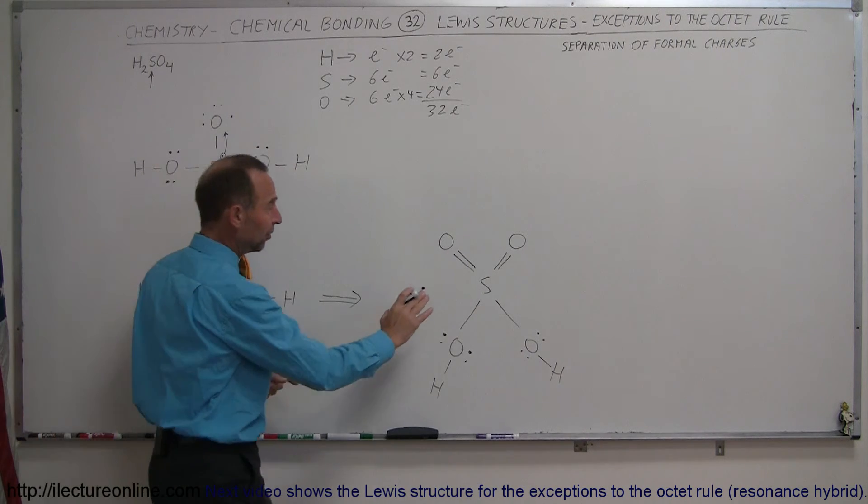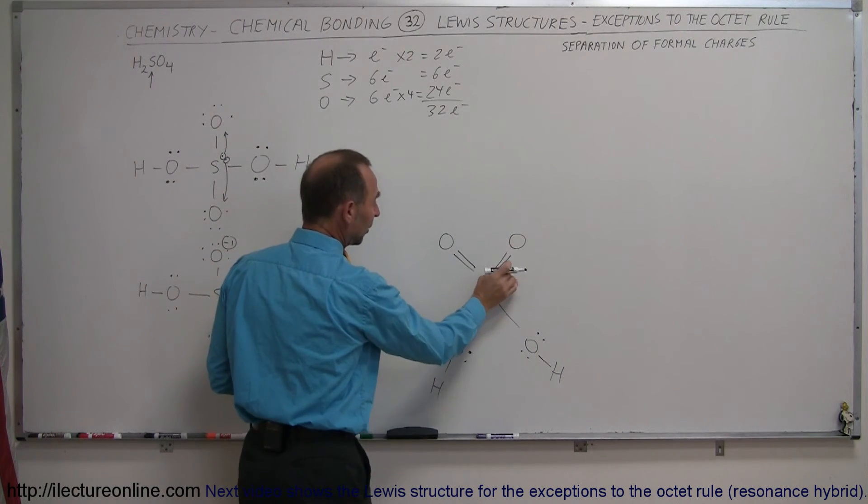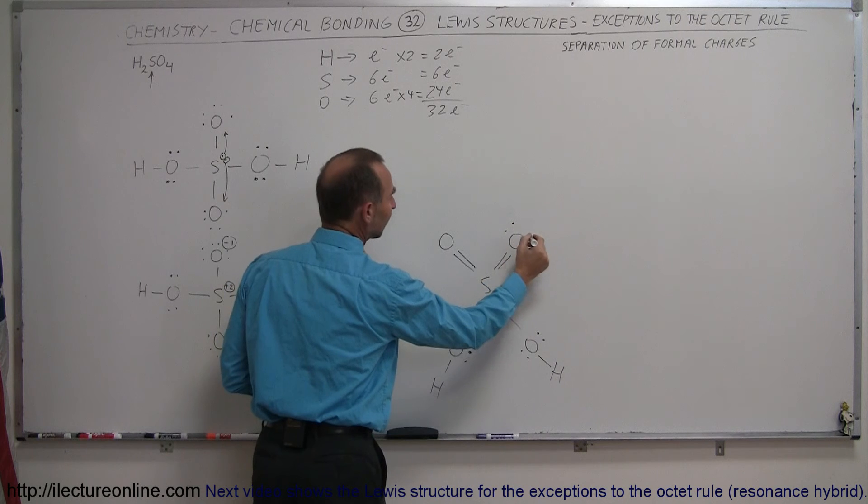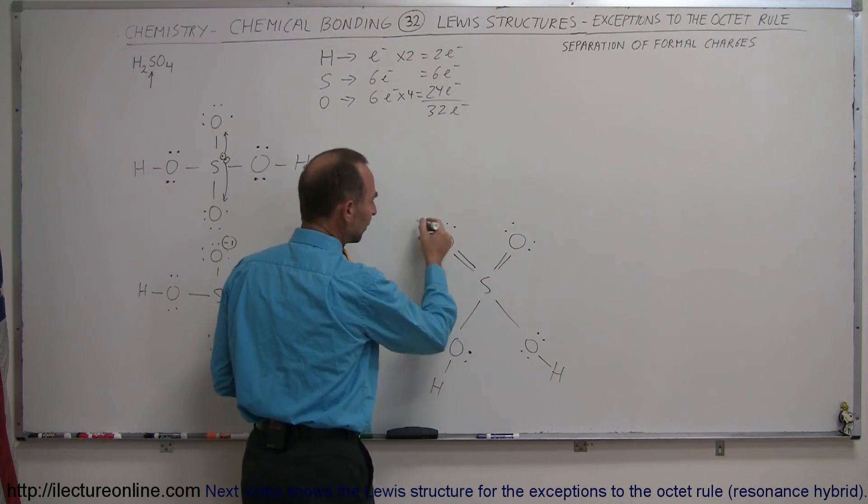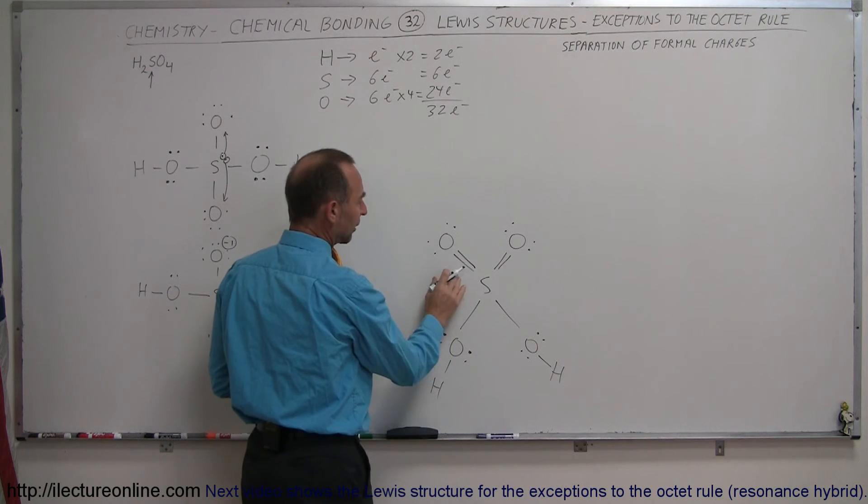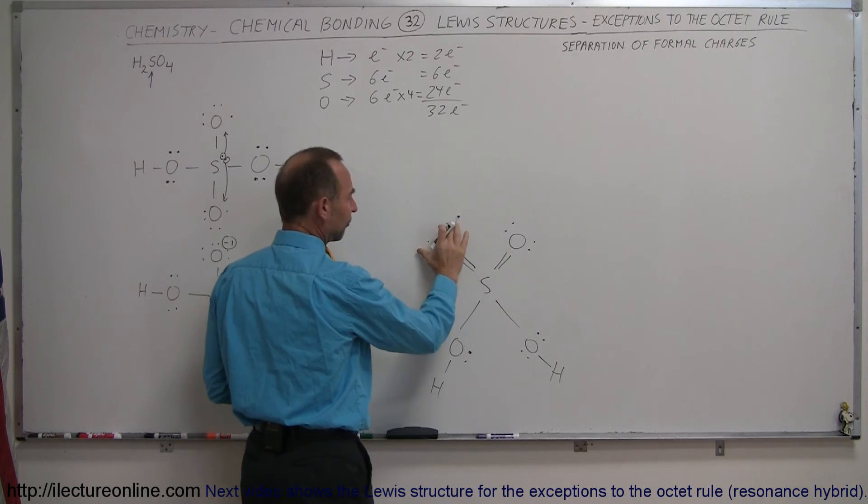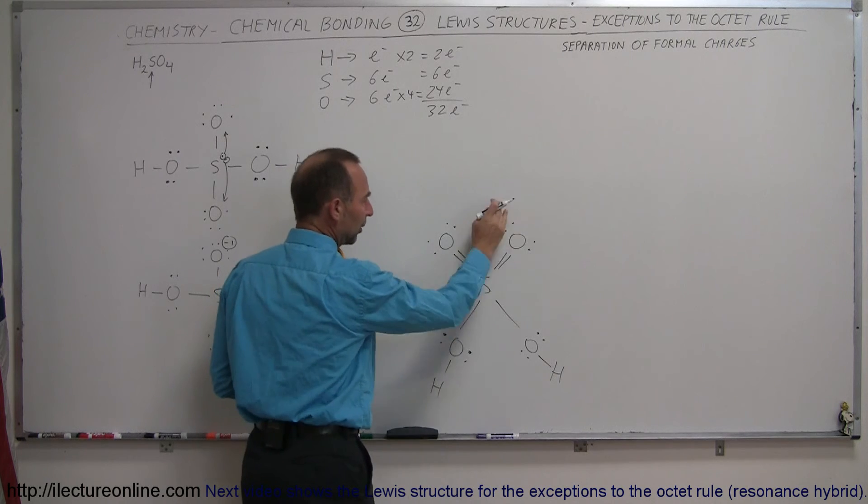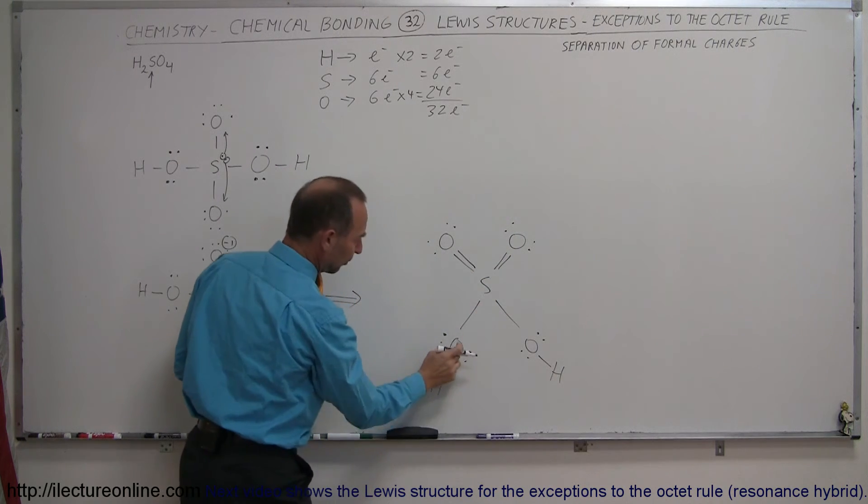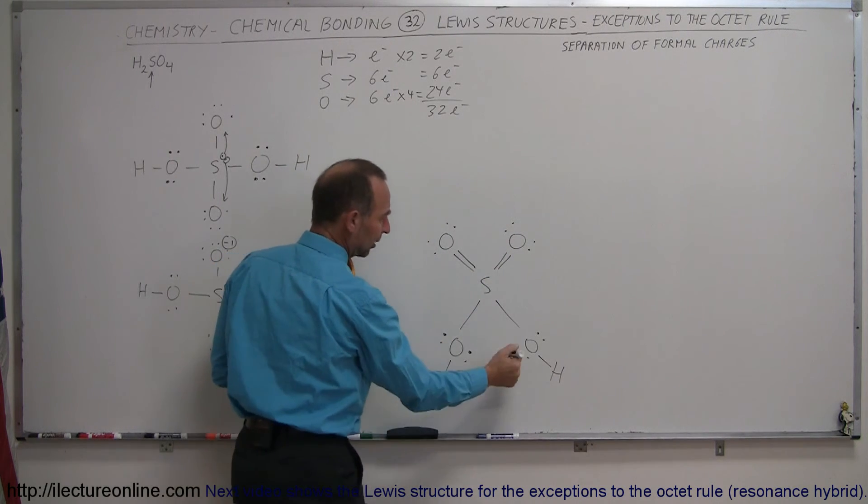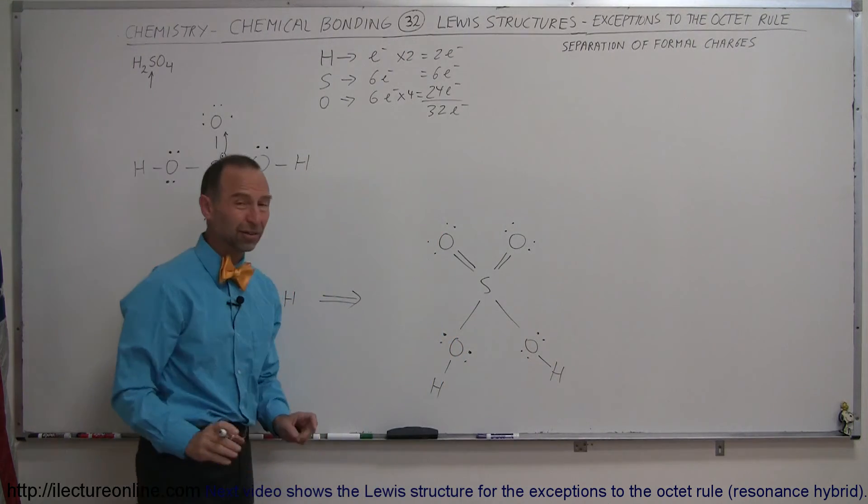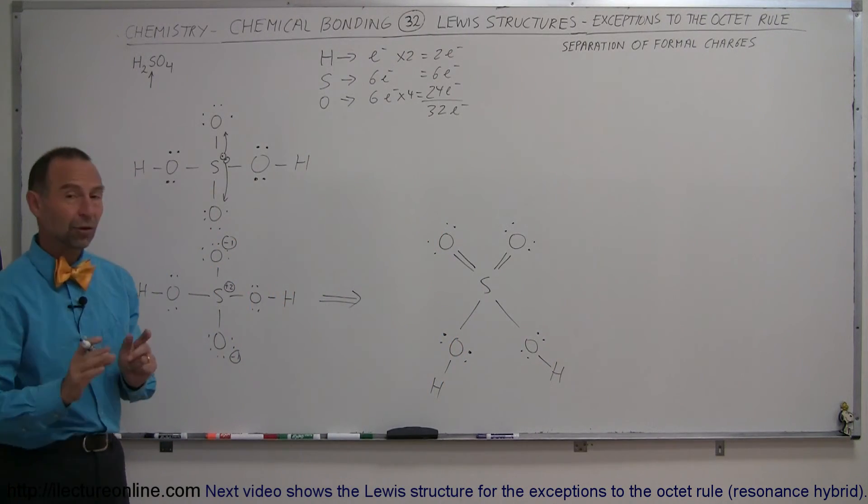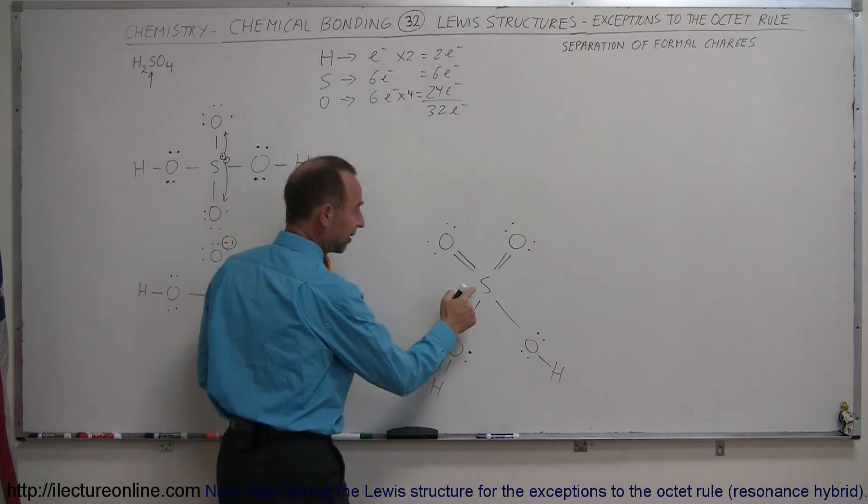Now notice, since these oxygens now have double bonds, they will now only have four electrons around them. Notice they will now, of course, follow the octet rule. We have four here and four there, that's a total of eight part of the time, total of eight part of time here. This one has two, four, six, eight electrons. Eight electrons. The hydrogens part-time have two electrons, so everything is satisfied as far as the octet rule is concerned, except for the sulfur.